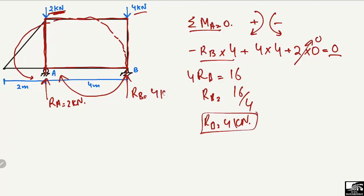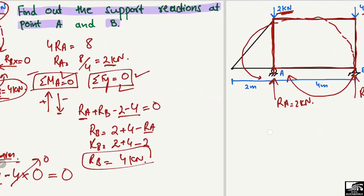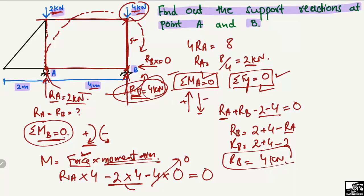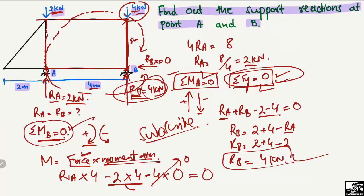Both methods confirm RB = 4 kN. I hope you understand how to find support reactions for any structure using these two simple equations: summation of moments at any point equals zero, and summation of vertical forces equals zero. Don't forget to subscribe to our channel for EC1 Engineering videos. Thank you for watching.